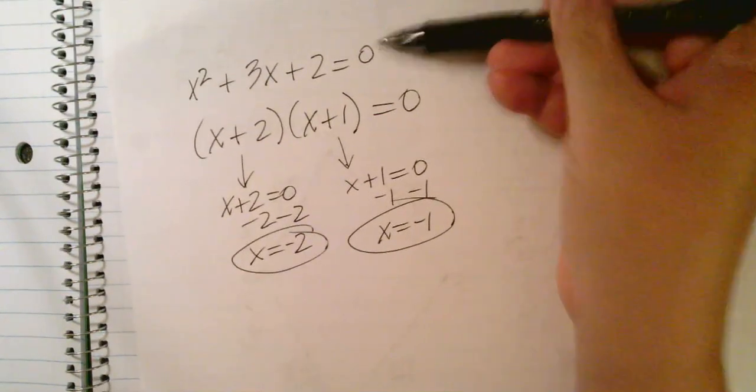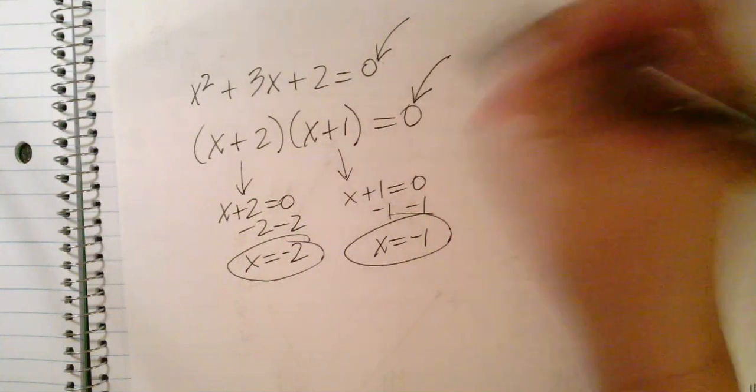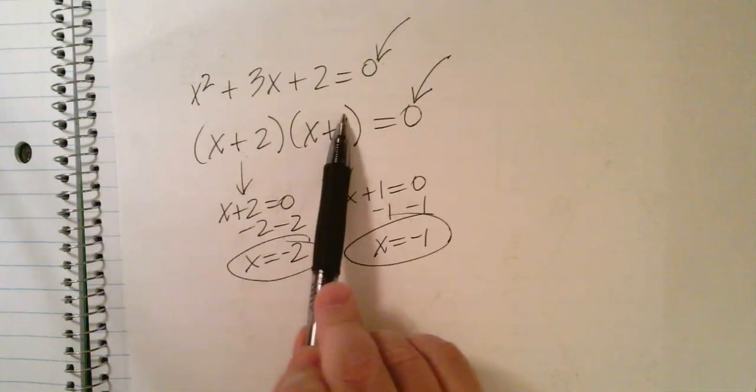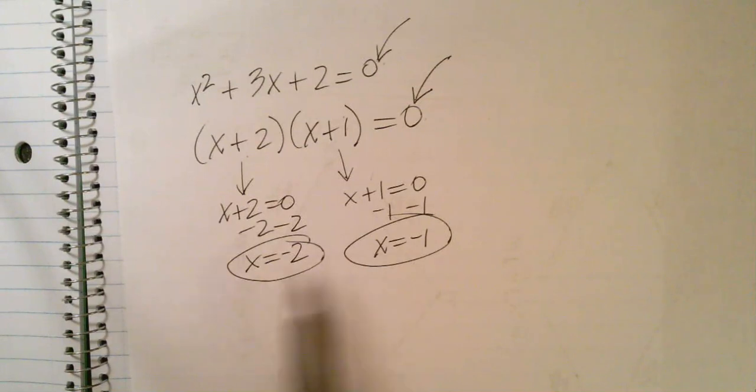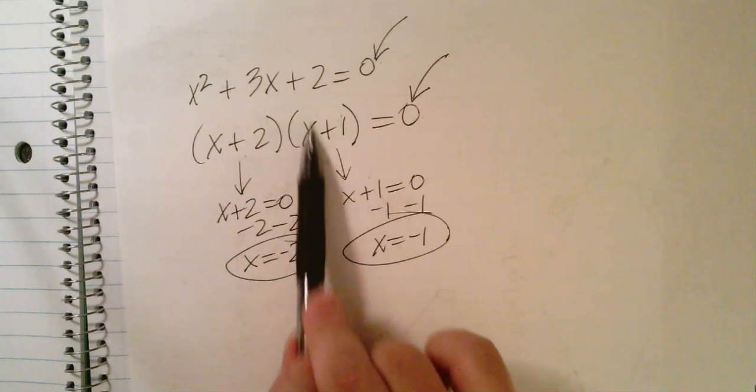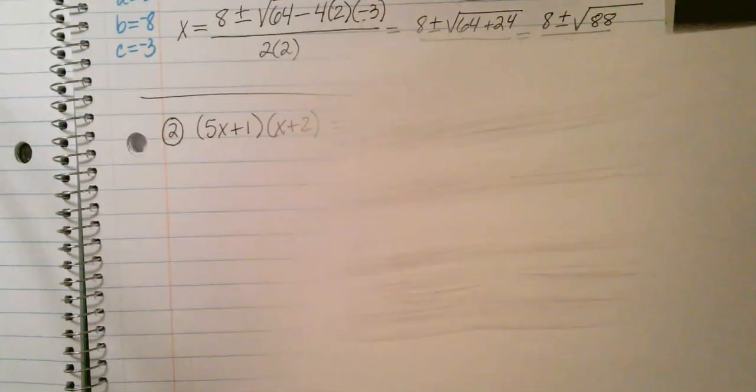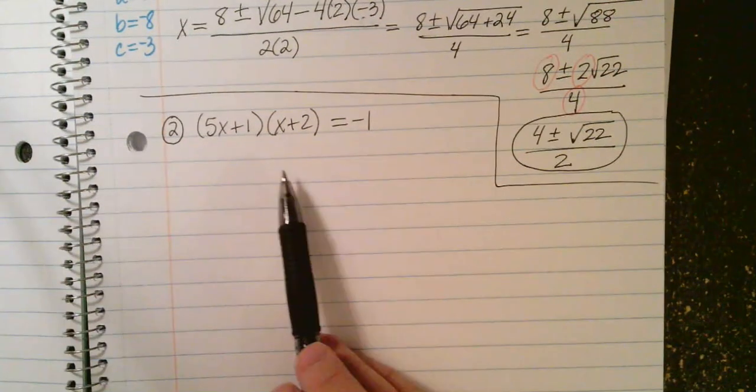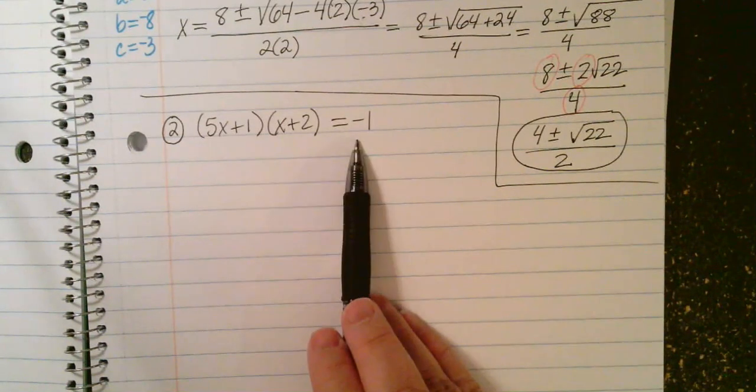Here's what I want you to notice. If we're going to factor to solve, we have to have a 0 on the right. Because what we're doing here is called the 0 product property. It says if two things multiply to give you 0, then one of them has to be 0. Either x is negative 2, which makes this 0. Or x is negative 1, which makes this 0. But we would have to have a 0 on the right. That's not what's happening here. So this is not, hey, it's already factored. It's time to solve. Let's just set each factor equal to 0. This is not that.